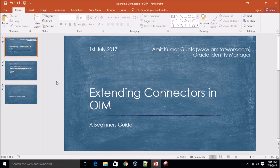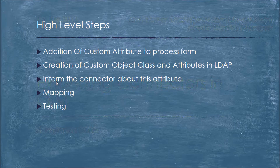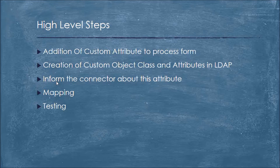Let's start. In order to add a custom attribute, there are four changes we need to perform. First, add a custom attribute to the process form. Second, create a custom attribute and custom object class in the LDAP server. Third, inform the connector about this attribute. Fourth, map the OIM-defined attribute with the LDAP-defined attribute. Finally, we will test the entire setup.